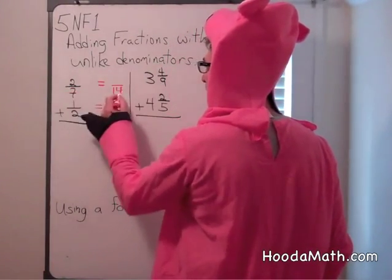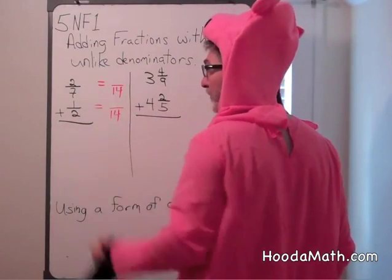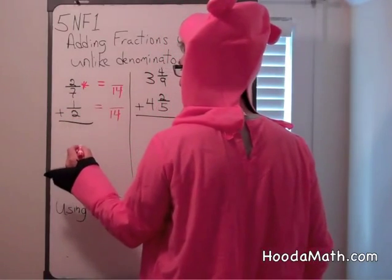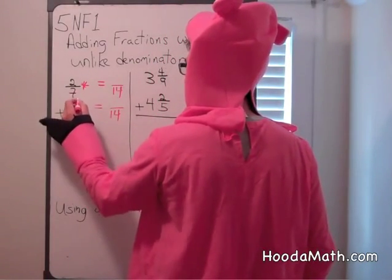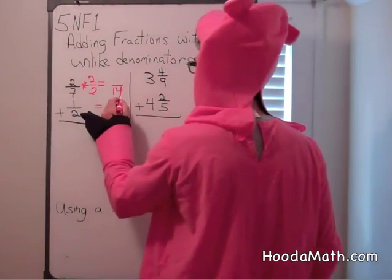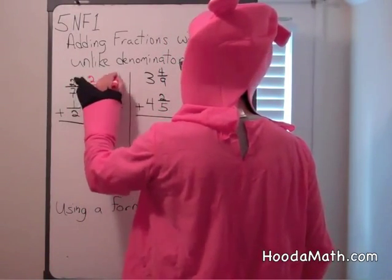How do we change 2 sevenths to fourteenths? We multiply by 2 over 2. 7 times 2 gives you 14. 2 times 2 equals 4.